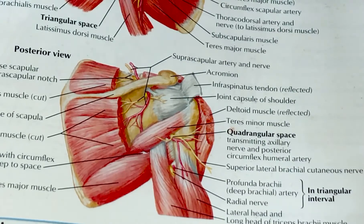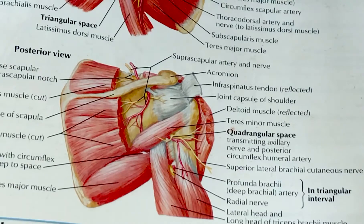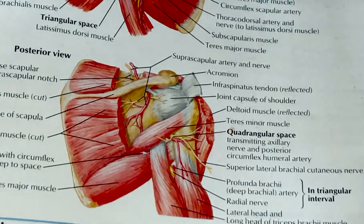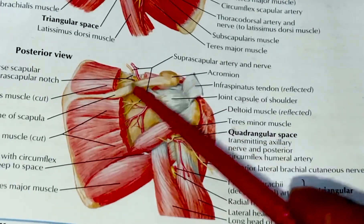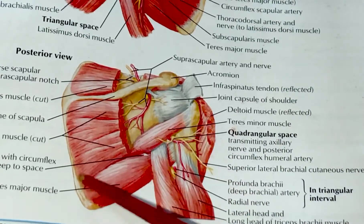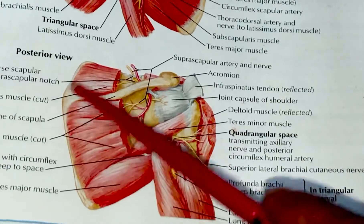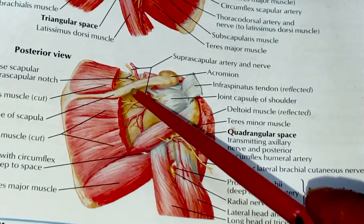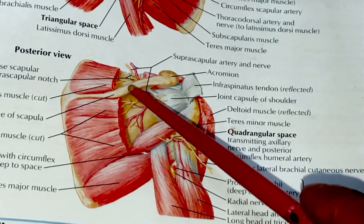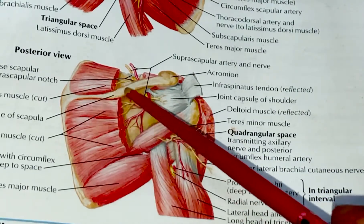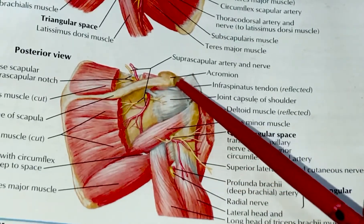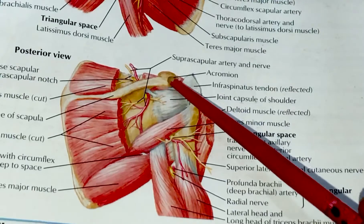Instead of cramming the nerve supply, it's better you try to memorize this diagram. In this diagram you can see this is the scapula bone and you are looking at the scapula from the posterior aspect, because this is the spine of the scapula you can see, and here it becomes the acromion process.